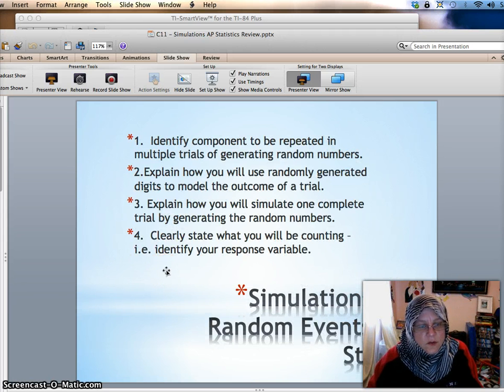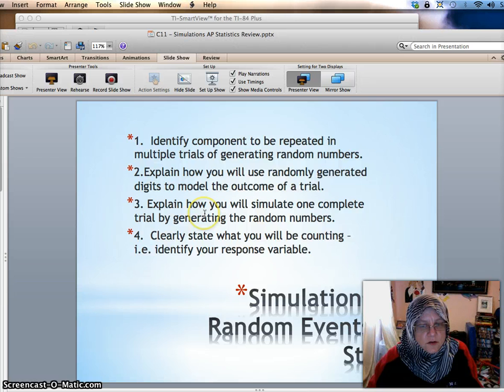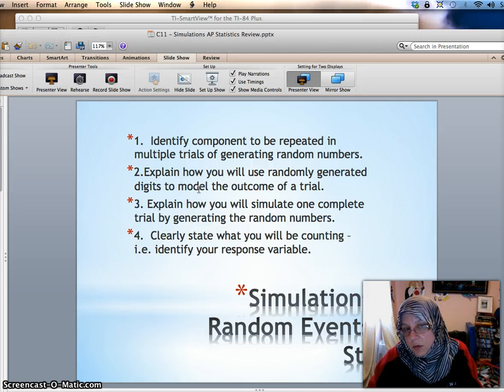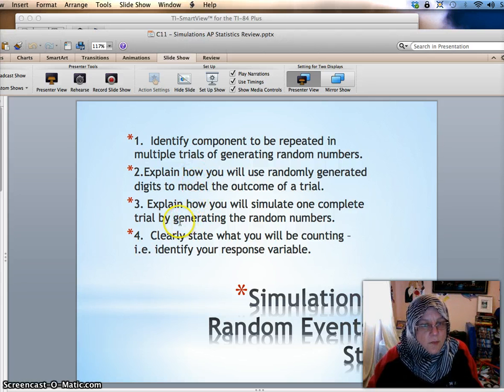And so what do we use this for? Usually, we're using this for conducting simulations of random events to generate some data as opposed to doing a sample survey or an experiment. There are seven steps that you need to do for a good simulation. One is to identify the component to be repeated, such as maybe throwing a free throw or taking a driving test. Number two, explain how you use randomly generated digits to model the outcome of a trial. So for example, saying that I'm going to use a random number table. And I'm going to use two digits at a time. And the digits 00 through 39 would represent successful free throw because the person is a 40% free throw shooter. And then any other digits would represent failure.